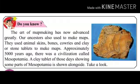The art of map-making has now advanced greatly. Our ancestors also used to make maps. They used animal skin, bones, cowries, and clay or stone tablets to make maps. Approximately 5,000 years ago there was a civilization called Mesopotamia. A clay tablet of those days showing some parts of Mesopotamia is shown alongside.